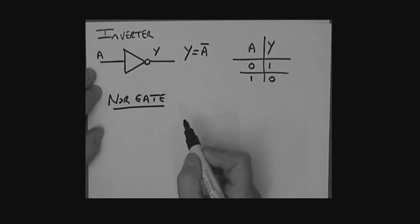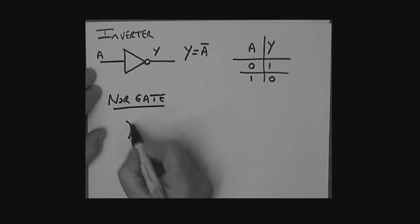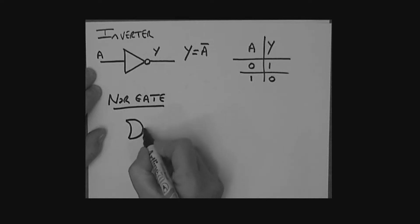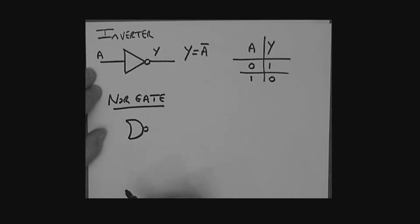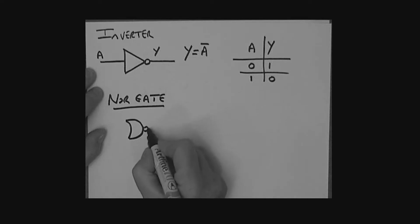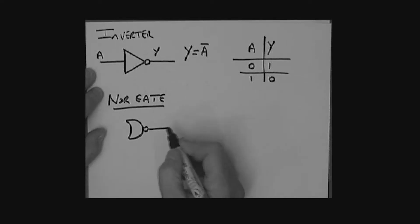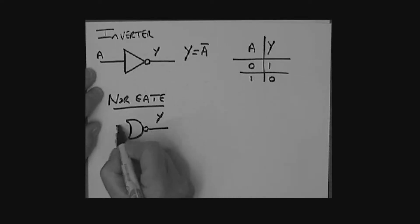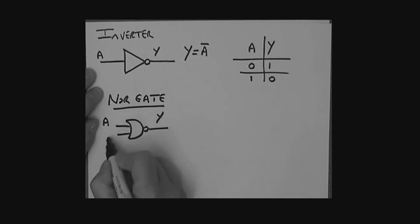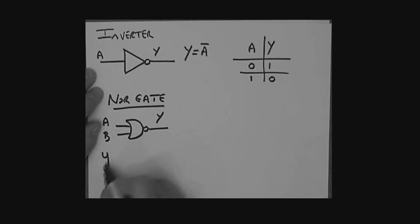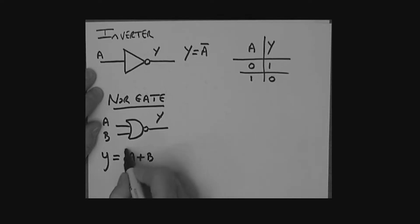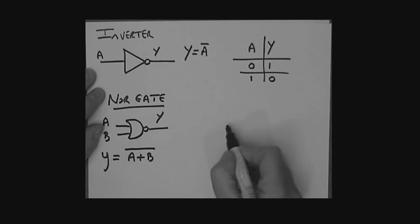Here is the NOR gate symbol — it's like an OR gate with a bubble on the end implying inversion. Inputs are A and B, output is Y. Y is equal to A OR B with the whole thing inverted.